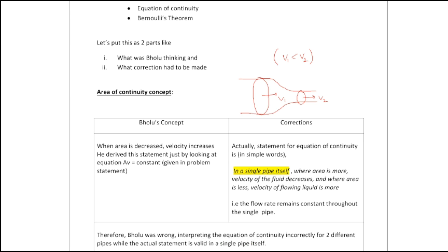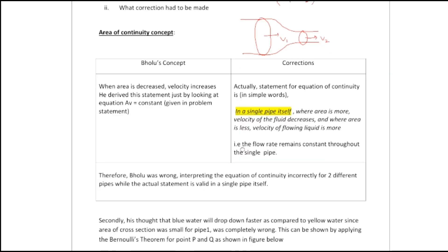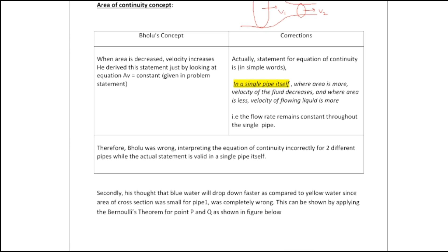Now let's come to the second part of this problem. Bholu's thought that blue water will drop down faster as compared to yellow water since the area of cross-section was small for pipe one was completely wrong. This can be shown by applying Bernoulli's theorem for points P and Q, which I will show you in the figure now.